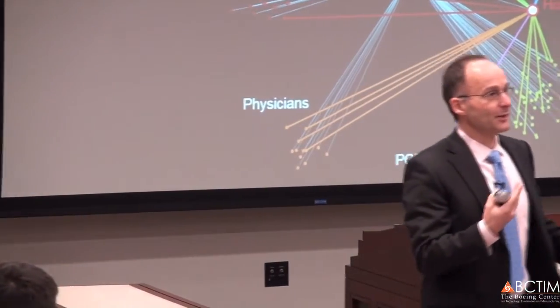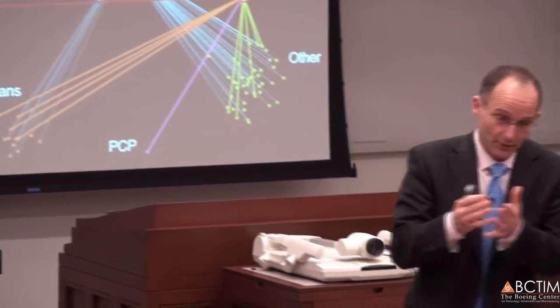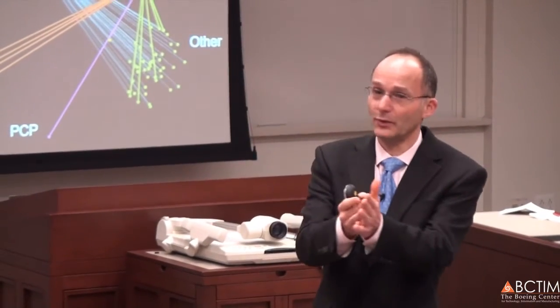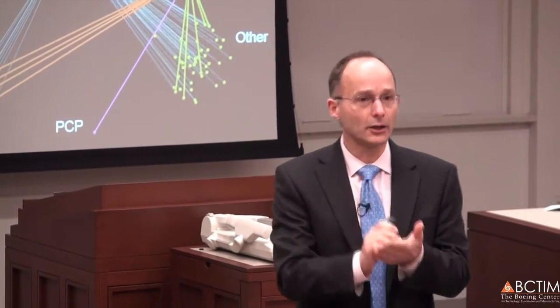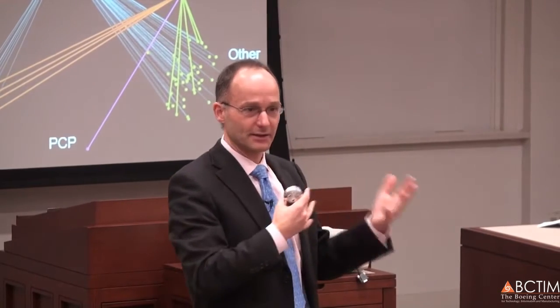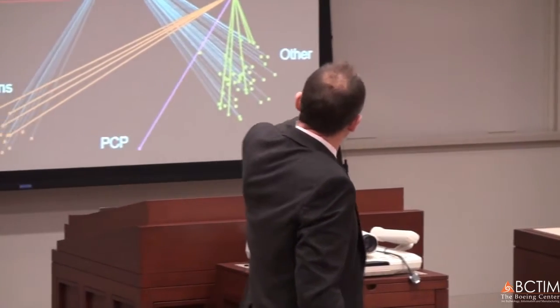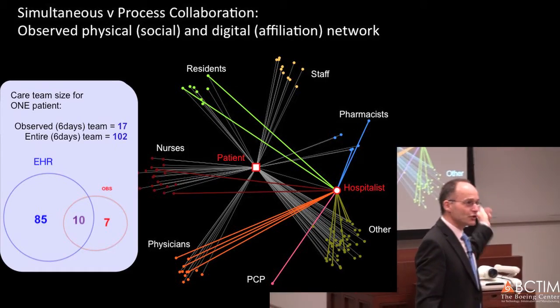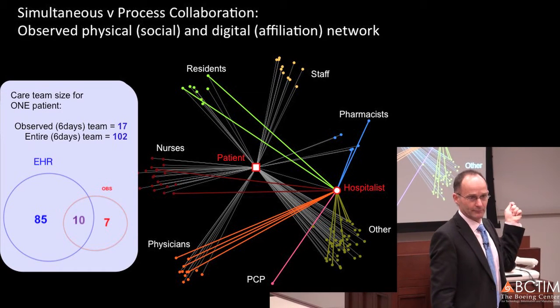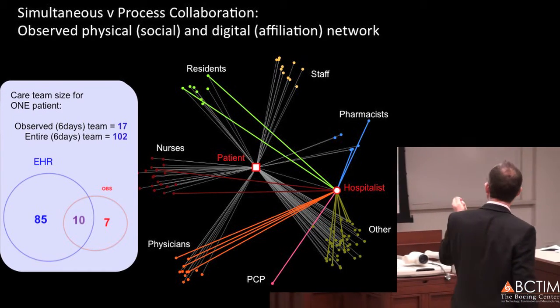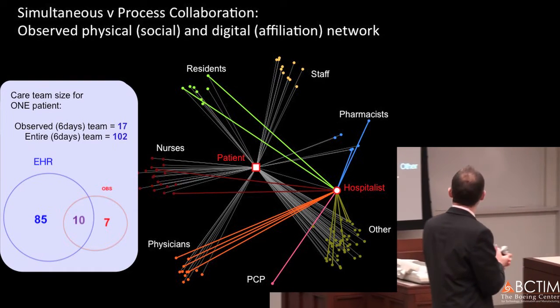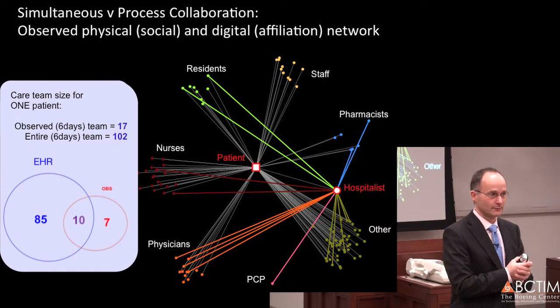We did some old-fashioned shadowing of the hospitalists, which means one of my PhD students walked with a hospitalist and recorded every second of what they were doing — including with whom they talked, when they sent a request, when they came back, et cetera. All those interactions my student observed are shown in color — those are the colored interactions — and that's what I call the observed physical network.